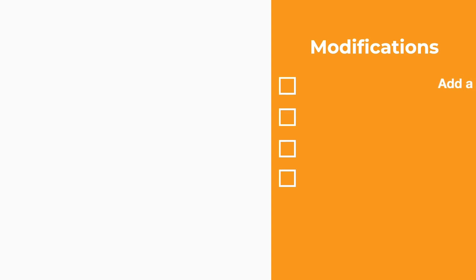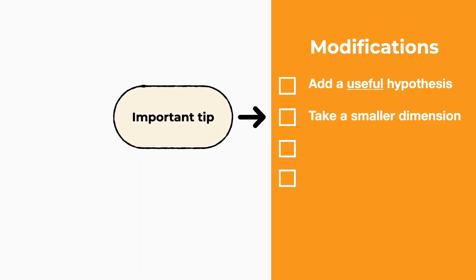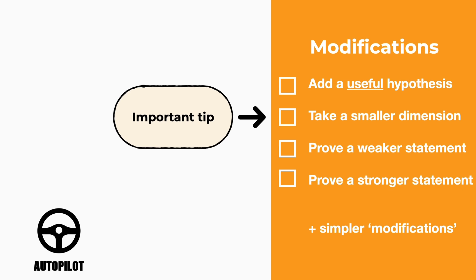These modifications are: adding a useful hypothesis, taking a smaller dimension where we will also see a very important tip, proving a weaker statement, proving a stronger statement, and also simpler modifications, which are so common they tend to become automatic for professional mathematicians and have probably already been attempted before getting stuck.